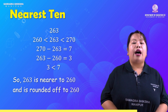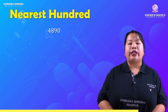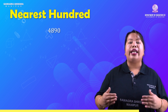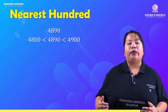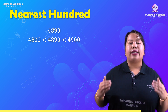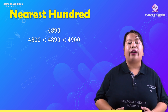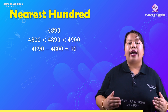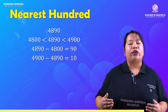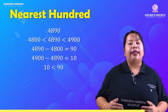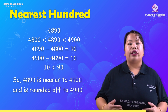Next, nearest hundred: for 4890. 4890 is between 4800 and 4900. 4890 minus 4800 gives 90; 4900 minus 4890 gives 10. Since 10 is less than 90, 4890 is nearer to 4900. Therefore, 4890 is rounded off to 4900.